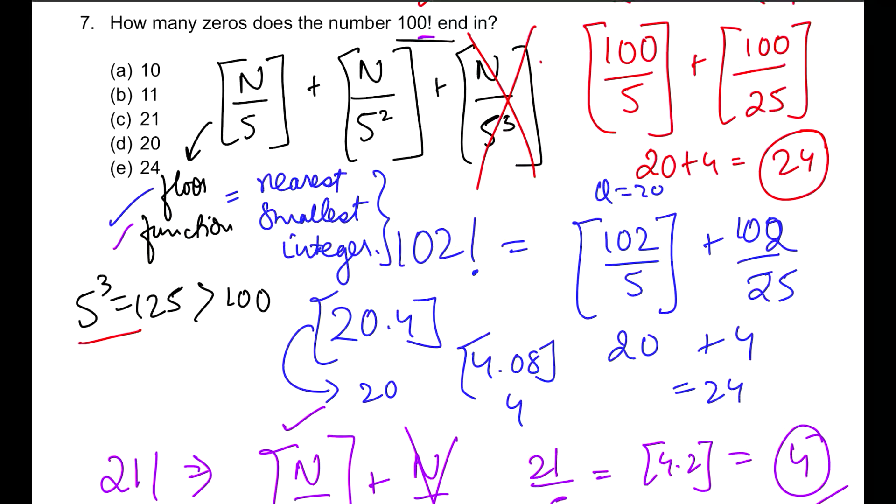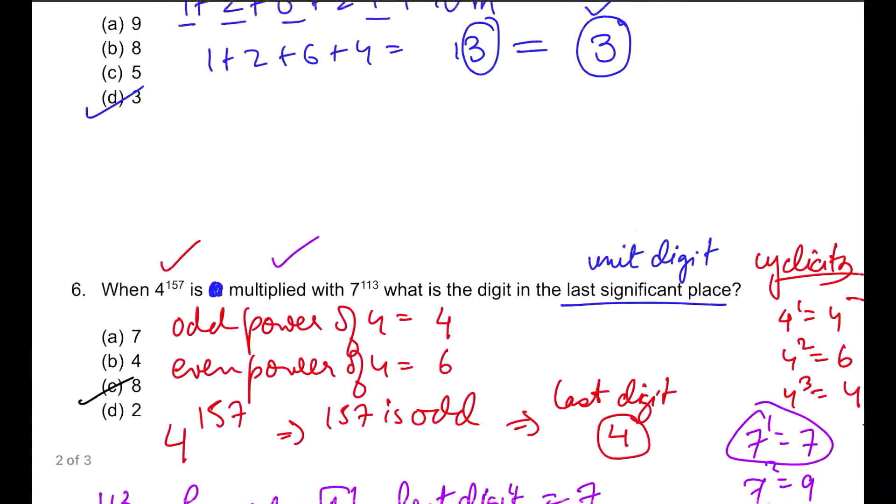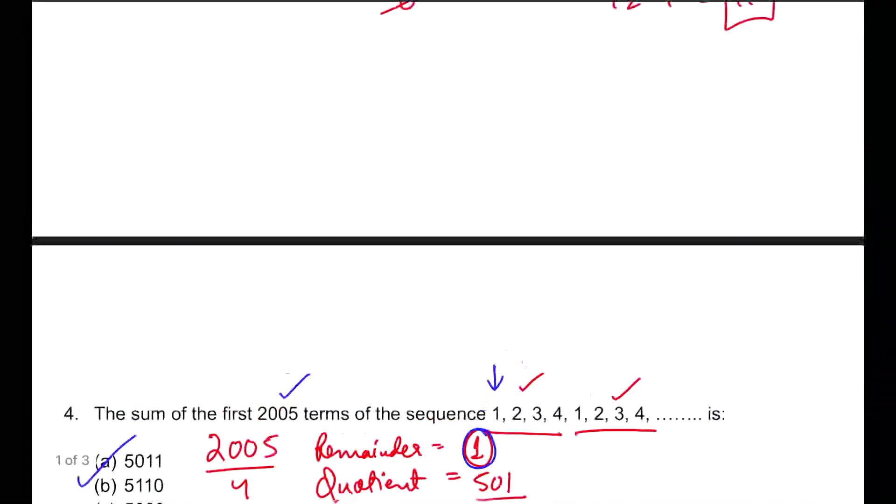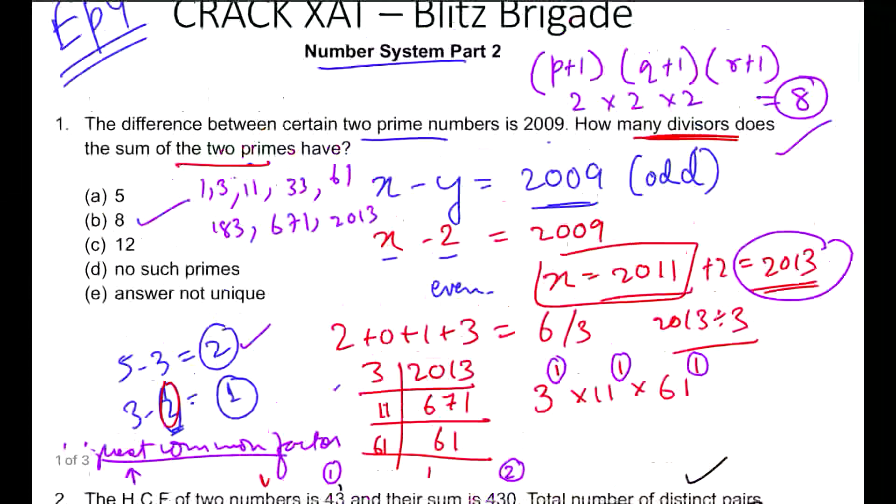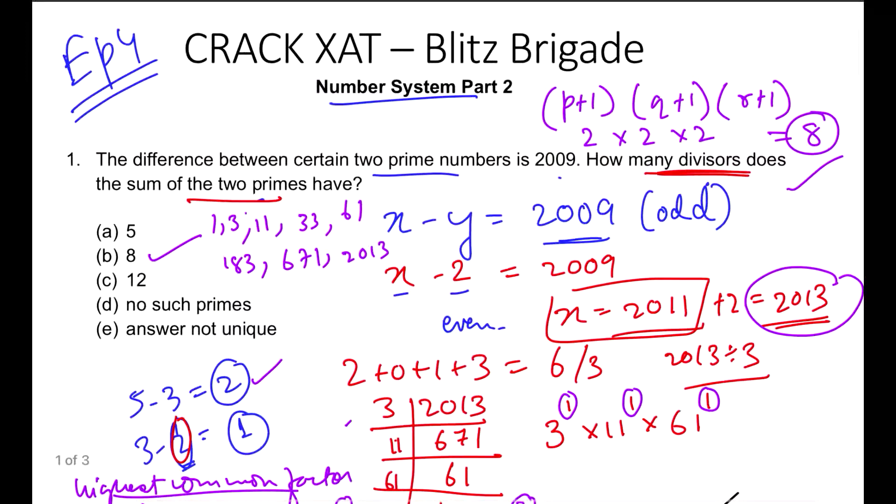With this I taught you the concept of floor function and how to find the number of zeros ending in factorial. This will help you in your entire omits process also. If you found the video useful, please like the video, share it with more people. If you're new, hit subscribe with the bell icon. Thank you for showing consistency over these 4 episodes of Blitz Brigade and joining the live session. If you have queries, drop below in comments or DM me on Instagram. Join my telegram group for free material. Thank you so much for watching. Take care, stay strong and study hard.